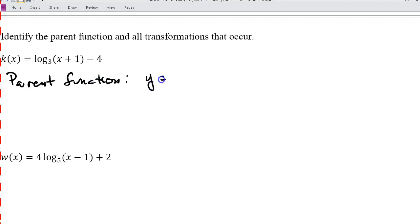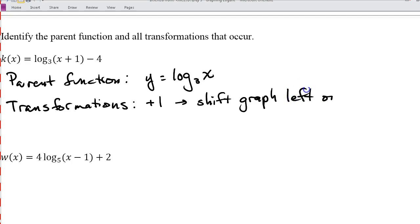is y = log₃(x). And then my transformations - it looks like we have two of them going on here. We have a plus one inside the parentheses, and this shifts the graph left one unit. And then we also have a minus four, and this shifts the graph down four units.